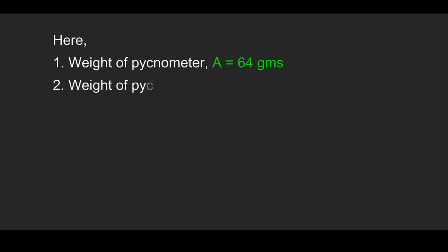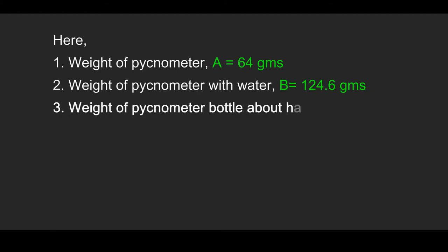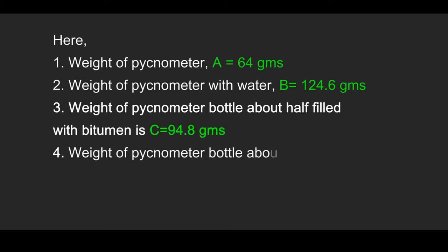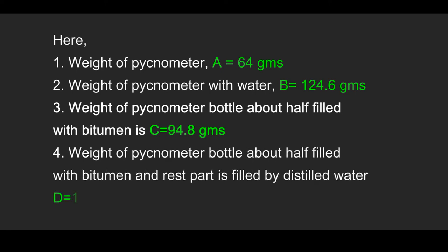Here, number 1: weight of pycnometer A is 64 grams. Number 2: weight of pycnometer with water B is 124.6 grams. Number 3: weight of pycnometer bottle about half filled with bitumen C is 94.8 grams.